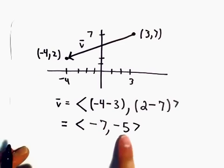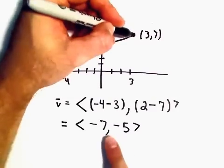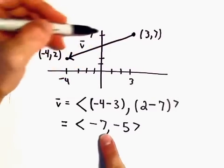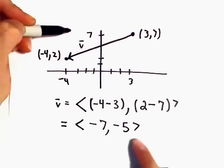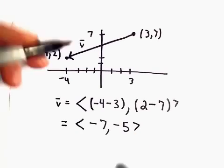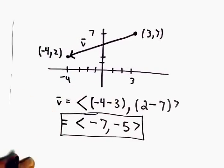And again, all this really says is if you're sitting at some point, what have you done? You've gone 7 units to the left, and then you've gone 5 units downwards. That's all that's happened. So that's our position vector.